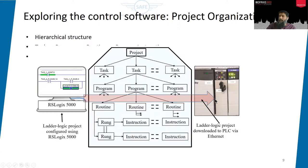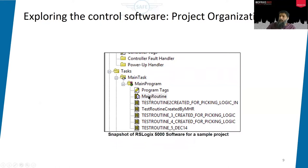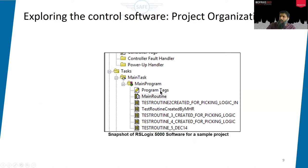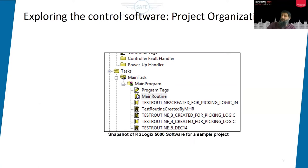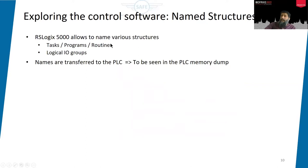This is a snapshot: the main task containing the main program, within which there are many routines. I have named some of the routines, as per the evaluation, to see them in the memory dump. Another important element is program tags — these are tags that can be used as logical inputs and logical outputs, similar to local variables in software programming. RSLogix 5000 allows us to name tasks, programs, routines, and logical groups, and these names are transferred to the PLC, so we can see them in the memory dump.